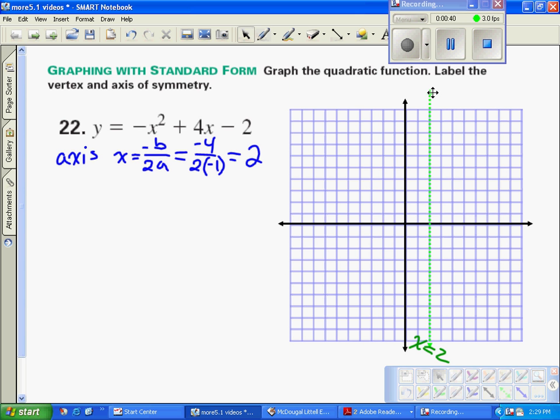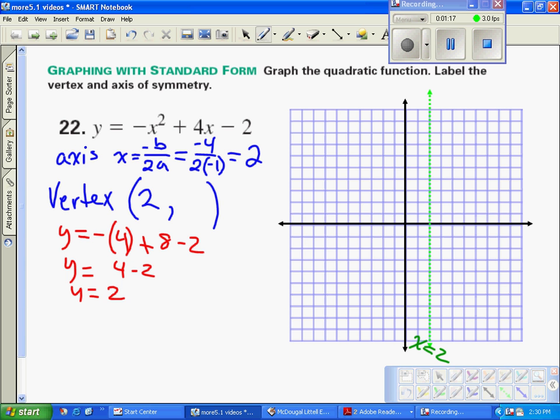From there, my vertex is found by the axis of symmetry. That axis of symmetry is the x-coordinate 2. Now I have to find the y-coordinate by plugging 2 back into the equation. y equals negative 4 plus 4 times 2 is 8 minus 2. So y is equal to negative 4 plus 8 is positive 4 minus 2, or y is equal to 2. I'm going to plot my vertex at 2, 2 right there.